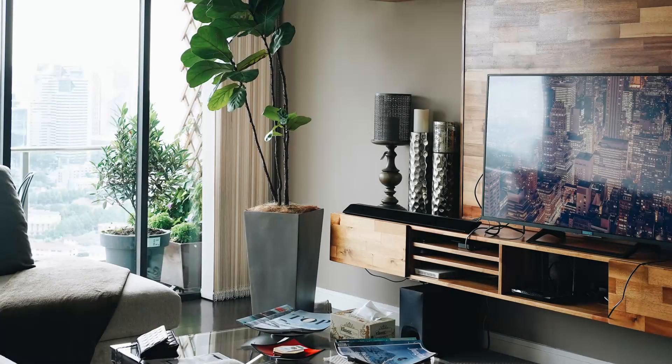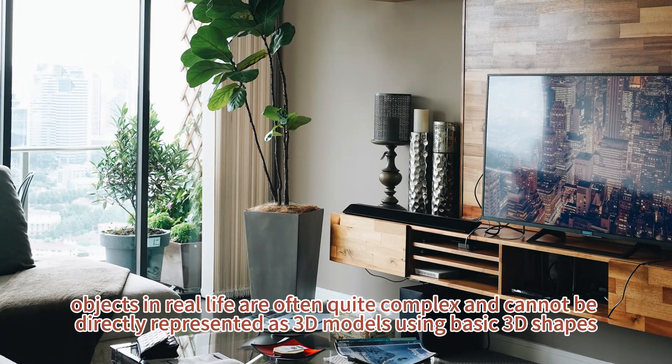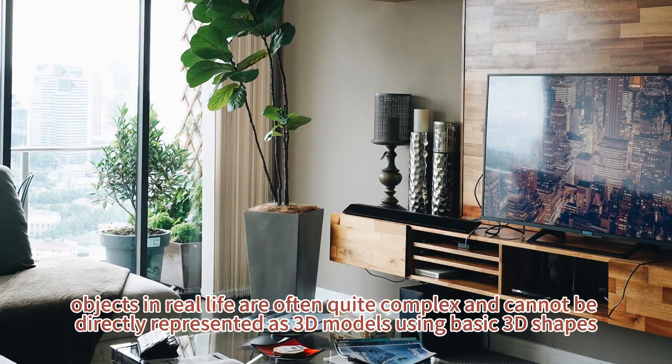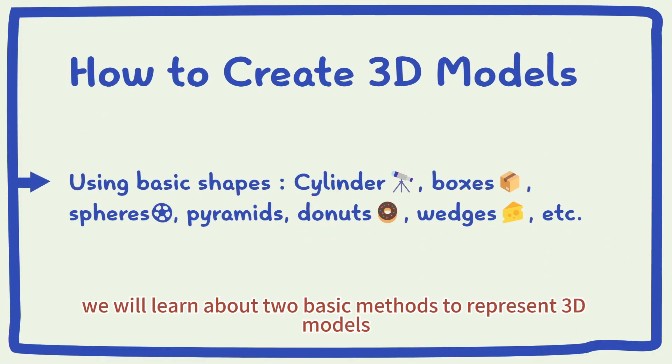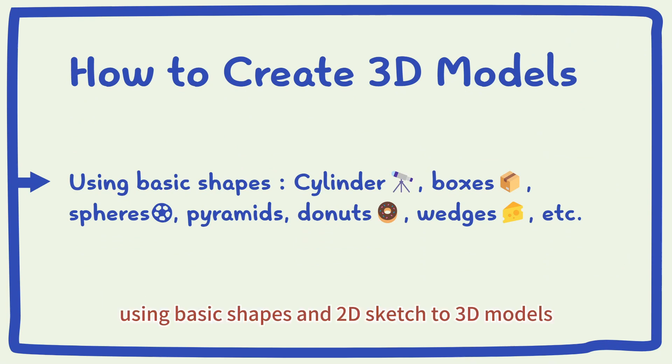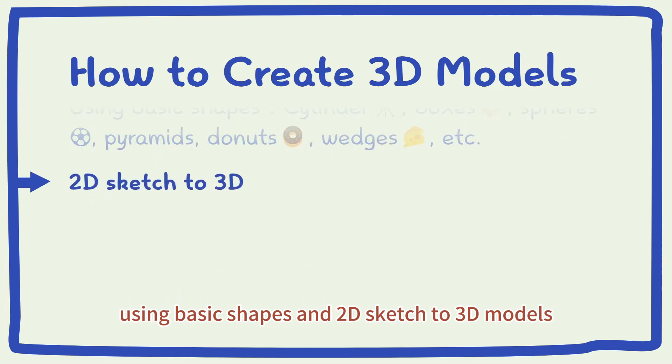Of course, objects in real life are often quite complex and cannot be directly represented as 3D models using basic 3D shapes. Thus, today, we will learn about two basic methods to represent 3D models: using basic shapes and 2D sketch to 3D models.